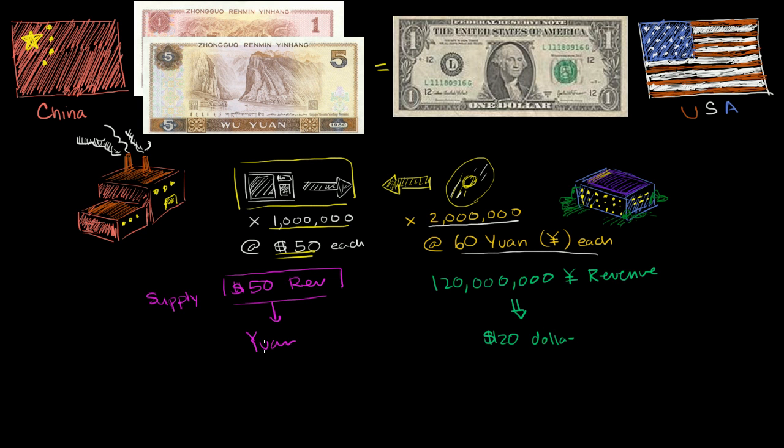And obviously, he wants to convert into yuan because that's what his costs are in. That's where he lives. This guy wants to convert into dollars because that's where his costs are. Now, this is the supply of dollars. These dollars want to be converted into Chinese currency. This right here is the demand for dollars. This is the amount of dollars needed by a guy converting from yuan.